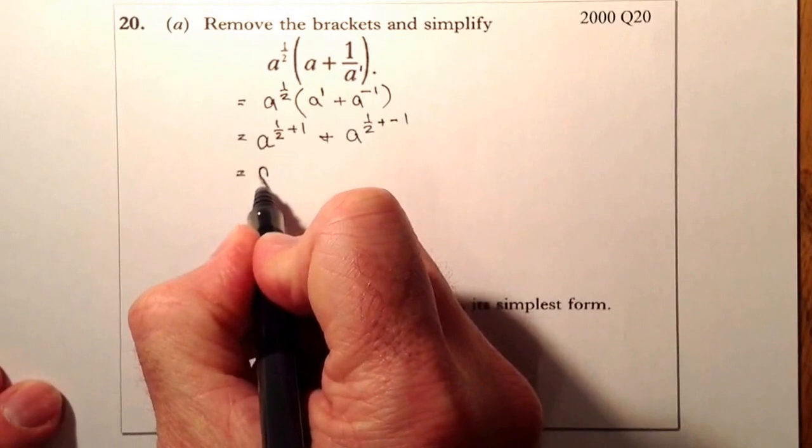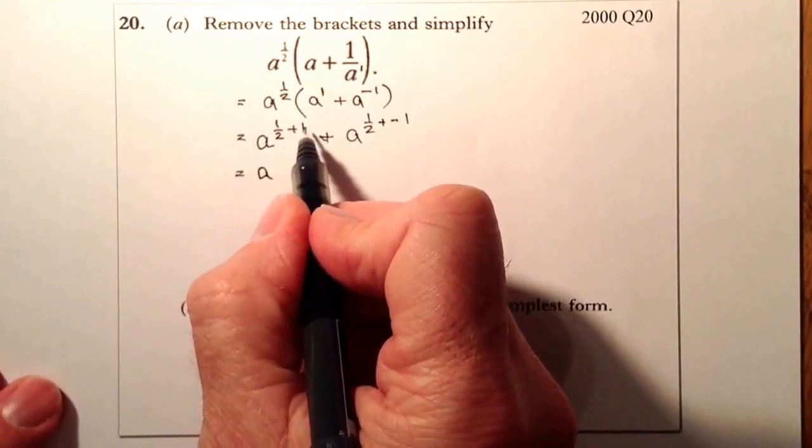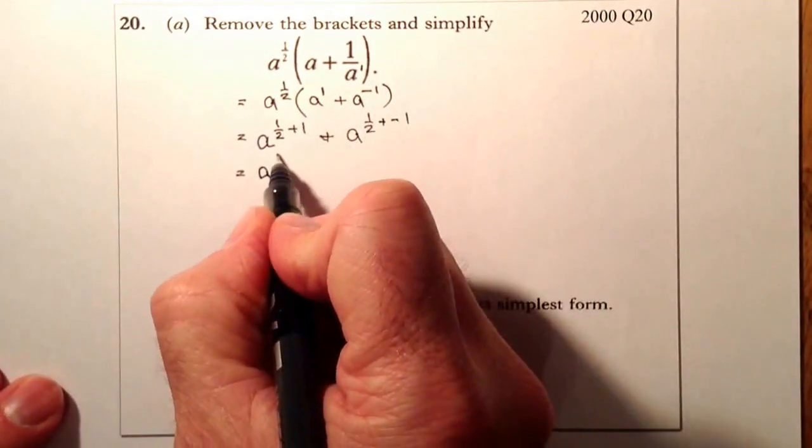Right, so from there, what I've got is 1 half plus 2 over 2 would give me 3 over 2.